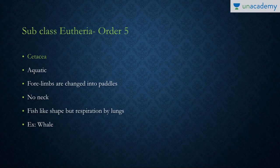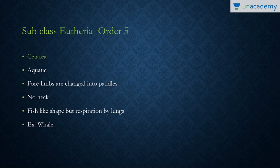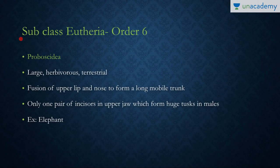The fifth order is Cetacea. These are aquatic mammals whose forelimbs have been modified into paddles. They have no neck and look like fish, but they respire by lungs. The blue whale (Balaenoptera) is the largest living animal. Another example is the dolphin, with scientific name Delphinus.